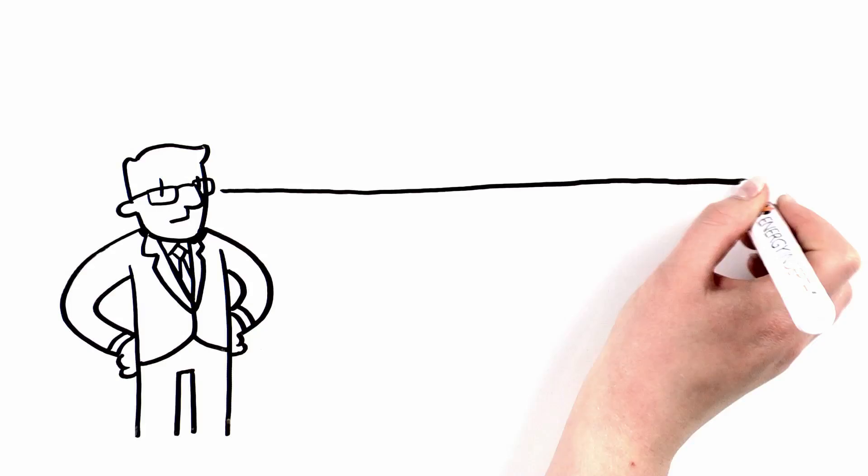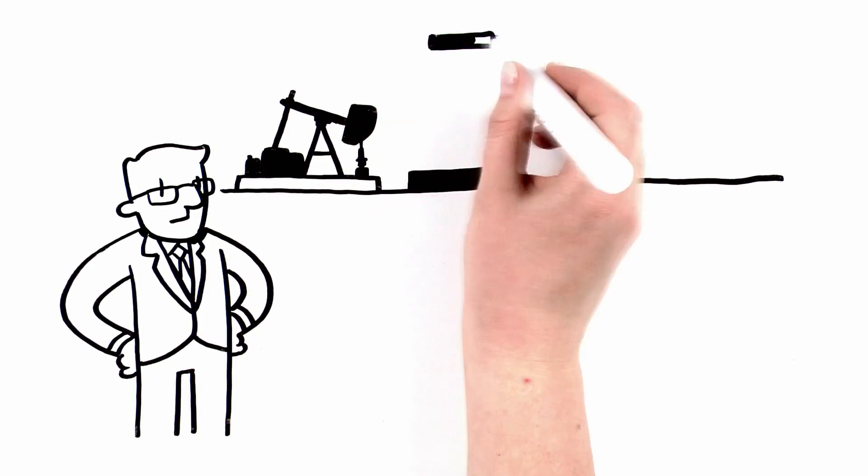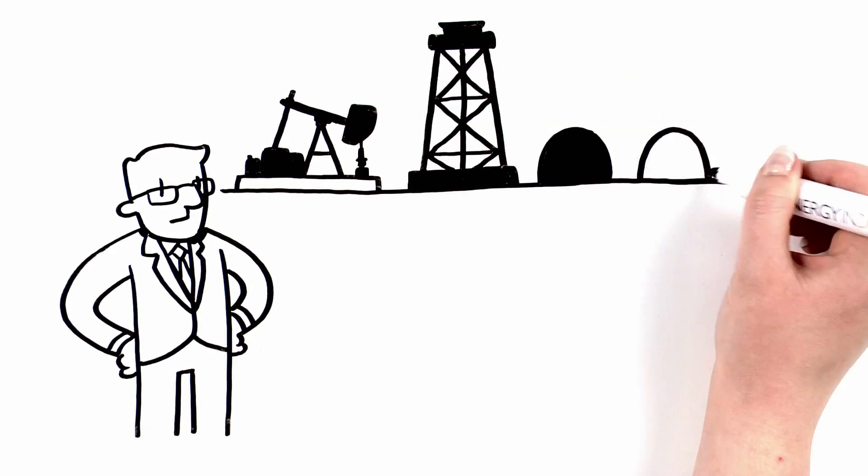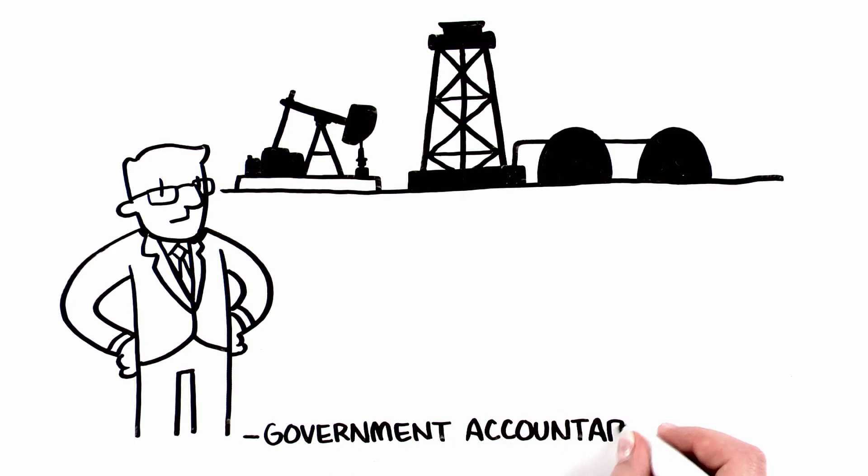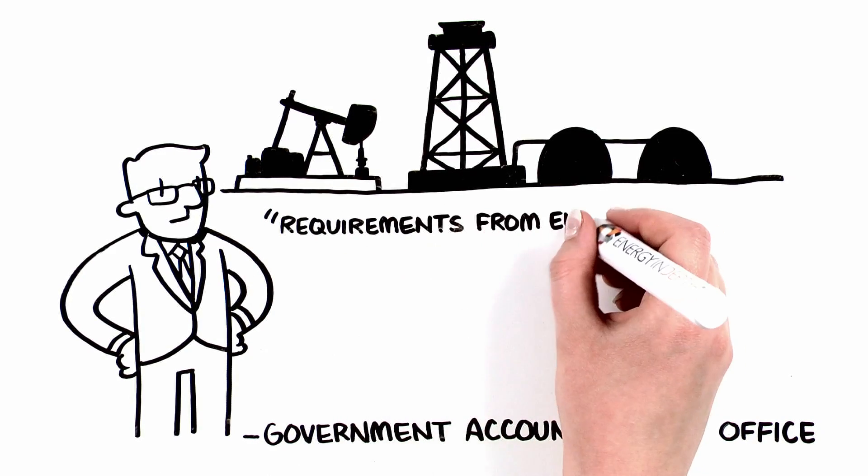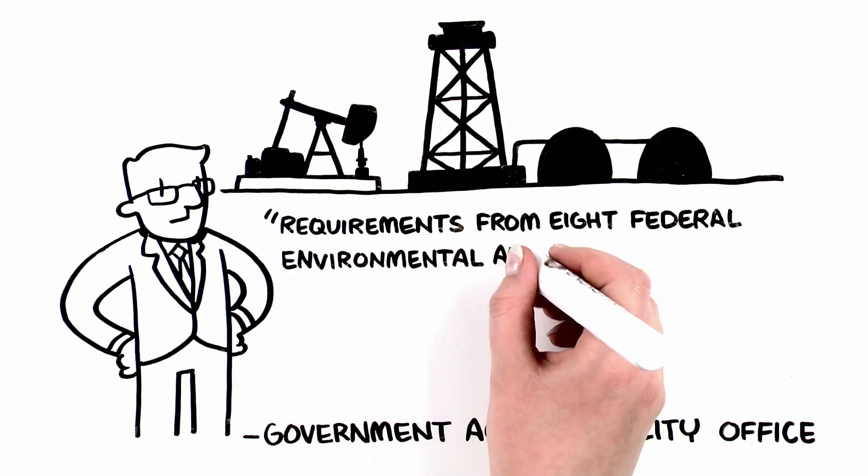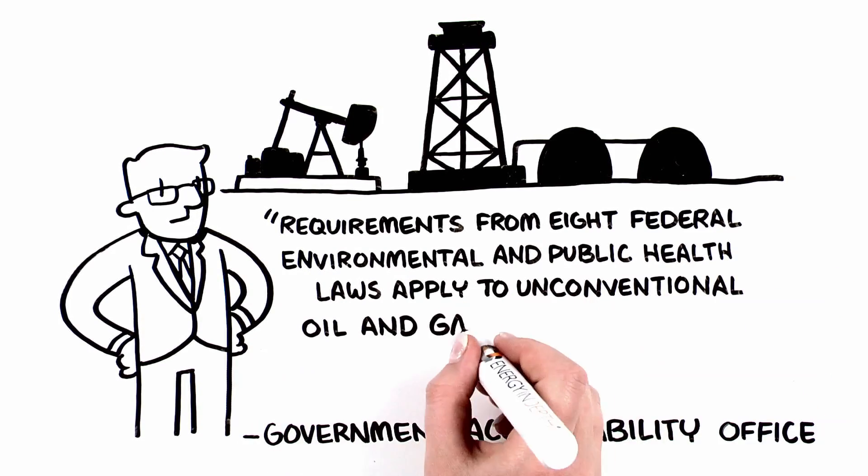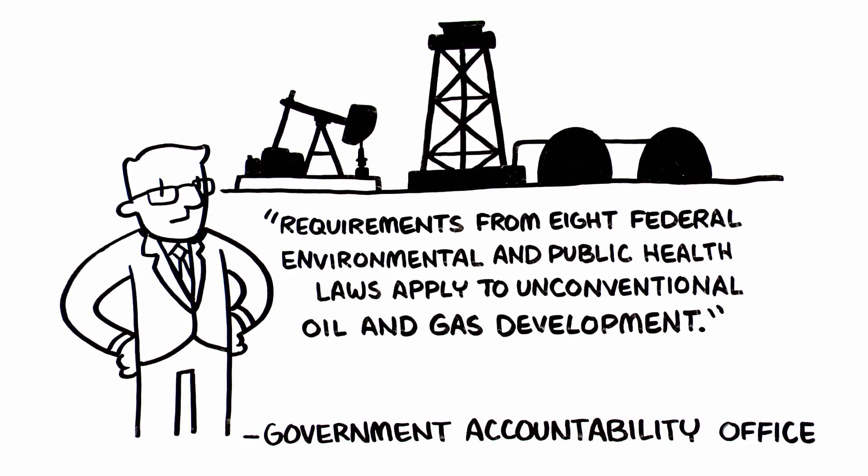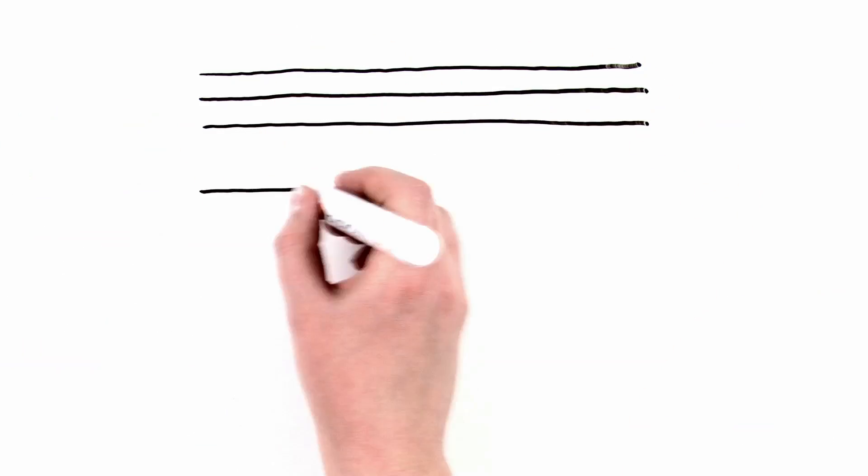This drilling process is highly regulated and ensures the protection of groundwater supplies and the safe development of underground energy resources. According to the Government Accountability Office, as with conventional oil and gas development, requirements from eight federal environmental and public health laws apply to unconventional oil and gas development. After the well has been drilled and the rig is removed from the well pad, fracking can begin.